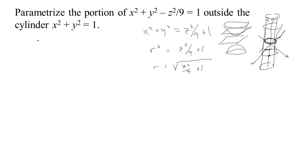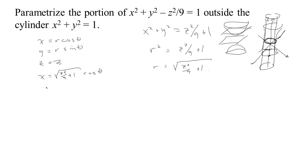Looking at our cylindrical equations, remember x is r cosine theta, y is r sine theta, and z is z. Then we have x equals the square root of z squared over 9 plus 1 times cosine theta, y equals the square root of z squared over 9 plus 1 times sine theta, and z is z. So we have x, y, and z in terms of just two inputs: theta and z.